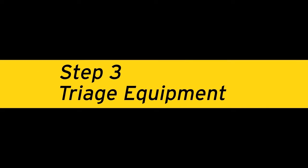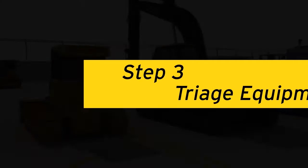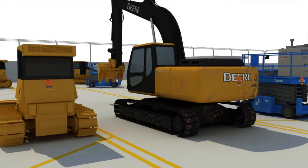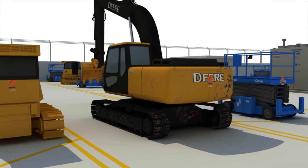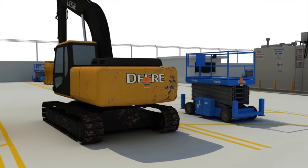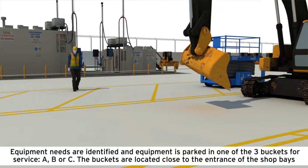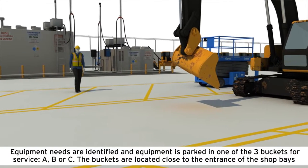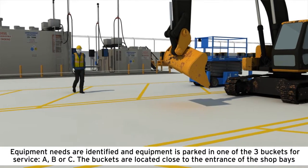Step 3: Triage equipment. The objective of triage is to check the equipment to identify if the piece needs an A service, B service, or anything more.